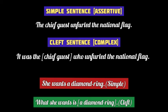We have a simple sentence on your screen — it's an assertive sentence: 'The chief guest unfurled the national flag.' Here there is no emphasis on a particular part of the sentence. But if we want to focus on or emphasize the chief guest as the doer of the action, we use a cleft sentence here.